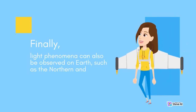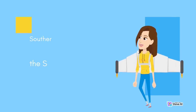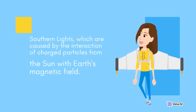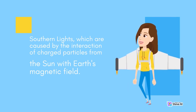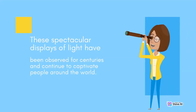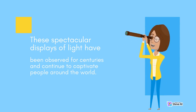Finally, light phenomena can also be observed on Earth, such as the northern and southern lights, which are caused by the interaction of charged particles from the Sun with Earth's magnetic field. These spectacular displays of light have been observed for centuries and continue to captivate people around the world.